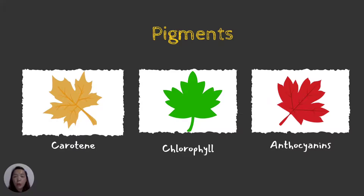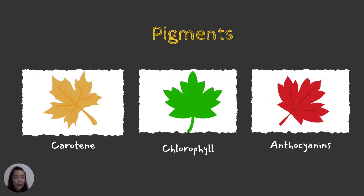Beetroot also has a lot of anthocyanins. So the different pigments in plants are carotene, chlorophyll, and anthocyanin. Remember, chlorophyll — the color green — is the pigment used in photosynthesis.